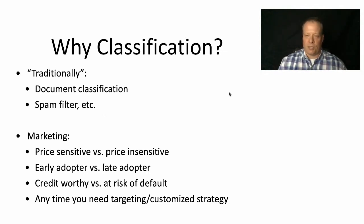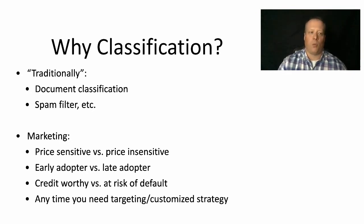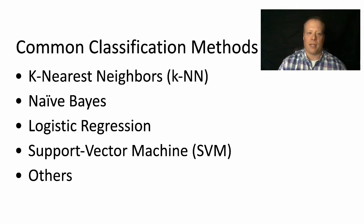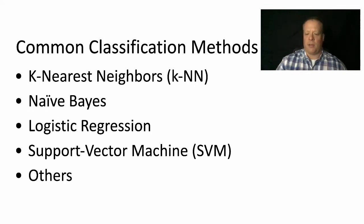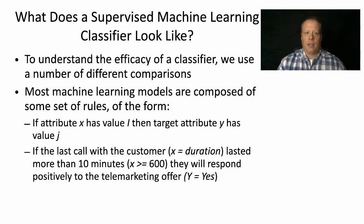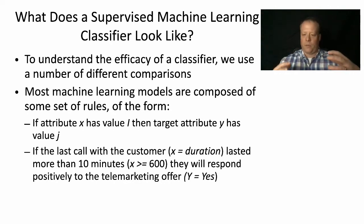Anytime you need that kind of targeting or customized strategy for your business problem, that's a great example of where you might want to use classification. There are a bunch of common classification methods out there — from k-nearest neighbors to naive Bayes to logistic regression to support vector machines — and I'll discuss many of those in turn when we get to those sections of the course. So what does a supervised machine learning classifier actually look like?